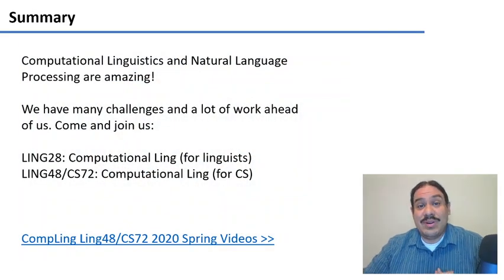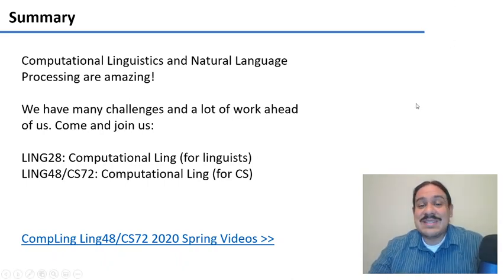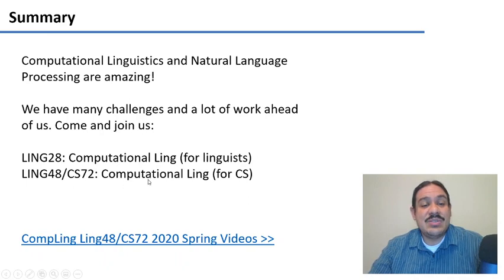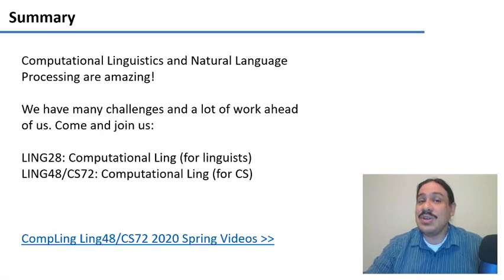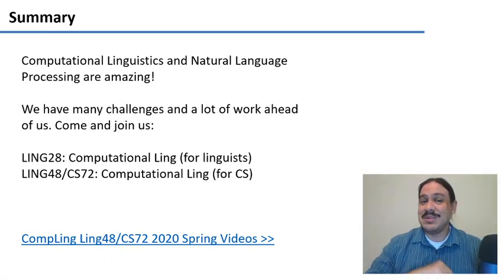In summary, there's a lot of work to be done, and there's a lot of cool research happening, so if you'd like to learn more, please join us. There's two classes at Dartmouth. There's Ling 28, which is for linguists, which requires no previous knowledge in programming, and Ling 48, CS 72, which is for CS, but it only requires intro to programming, CS 1, and it's being taught next spring. So if you'd like to find out more, come on and join us.